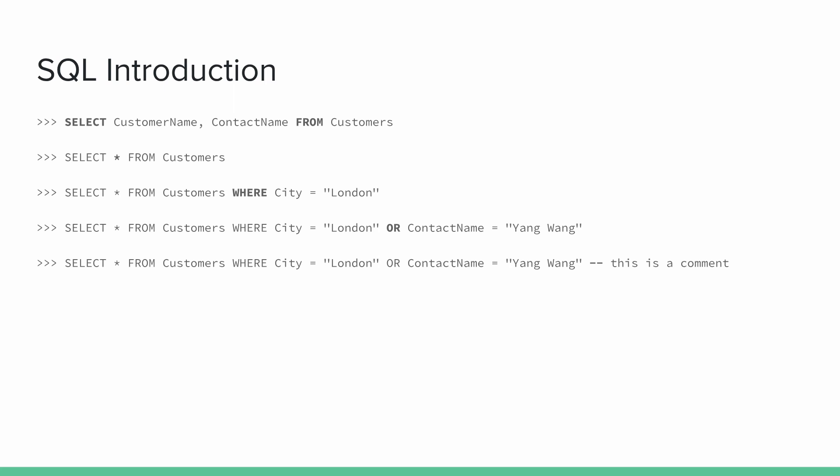We can also use the WHERE clause — for example, SELECT everything FROM customers WHERE city is London. We can also use the OR keyword to select every customer where the city is London or the contact name is Yang Wang. And using two dashes, you can insert comments, which is going to be important when we talk about how the injection attack works.